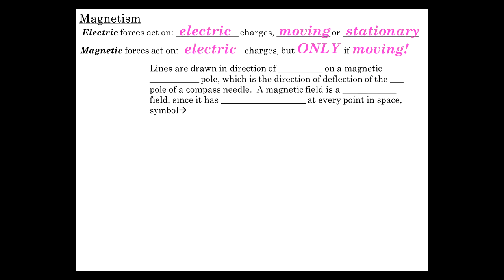Well, consider how we represent magnetic fields. We have a bar magnet. Lines are drawn in the direction of force on a magnetic north pole. So, the magnetic field lines are drawn in the direction of force on a magnetic north pole, which is like the north pole of a compass needle.